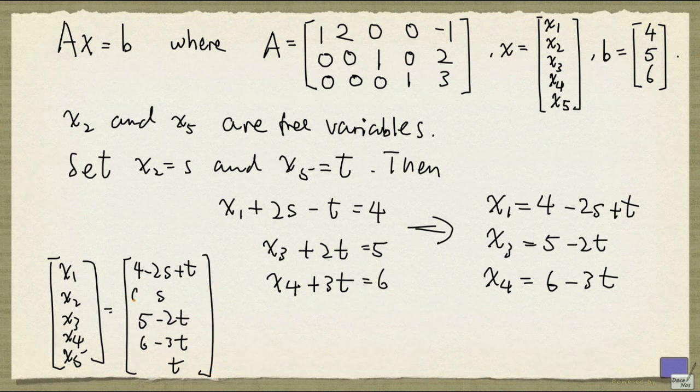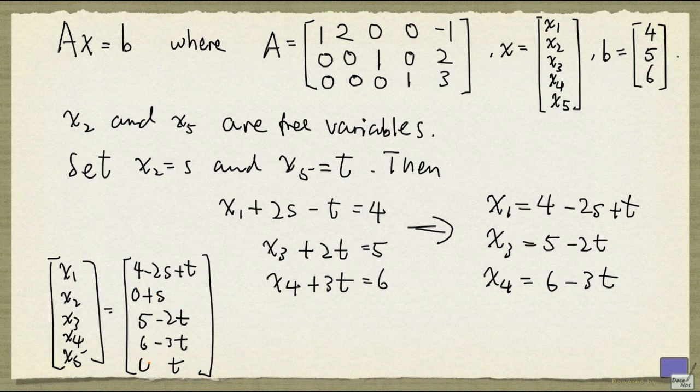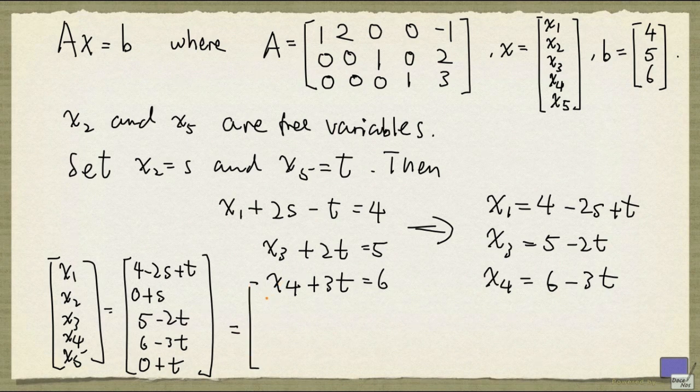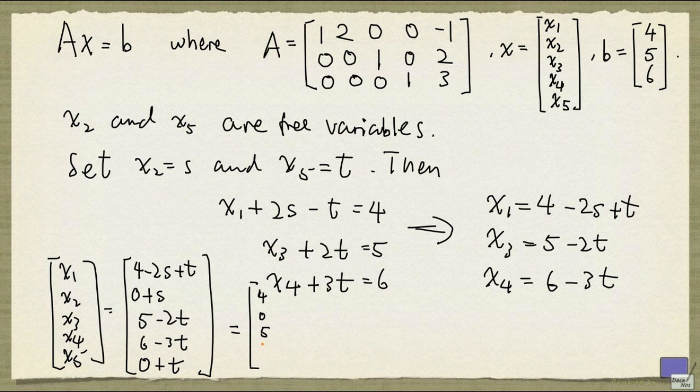Now we can rewrite x2 as 0 plus s, and x5 is 0 plus t. Then we can separate things a bit. So I can write this as 4, 0, 5, 6, 0,